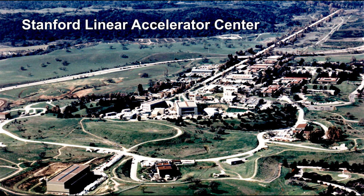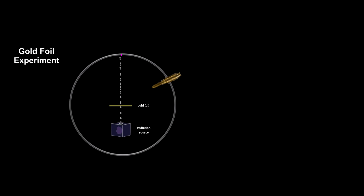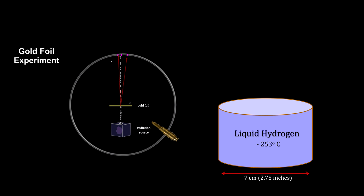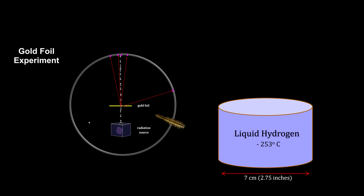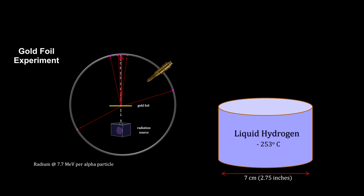In 1969, a team of scientists at the Stanford Linear Accelerator Center, or SLAC for short, in conjunction with MIT, performed scattering experiments similar in principle to what Rutherford did to probe the atom 58 years earlier. Rutherford's target was a gold foil; in the SLAC experiment, the target was liquid hydrogen at a very cold temperature to keep the protons as close together as possible. As a source, Rutherford used a small piece of radium with alpha particle energy of 7.7 million electron volts.